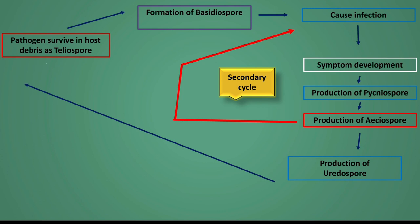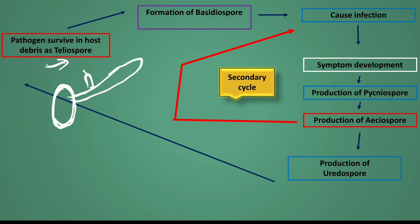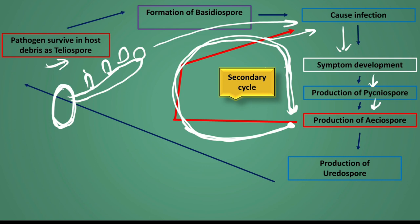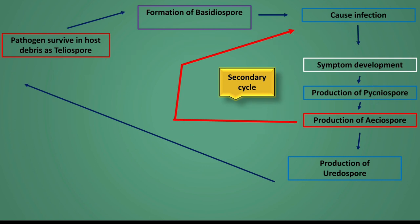Disease Cycle: The pathogen survives in crop debris as teliospores, which are oval and thick-walled. Teliospores germinate and produce basidiospores, which are carried by wind and cause primary infection on the crop. After infection, the pathogen multiplies and symptoms appear. Then pycniospores are formed, followed by aeciospores. The aeciospores spread to other plant leaves and cause secondary infections, and this aeciospore secondary infection cycle continues.